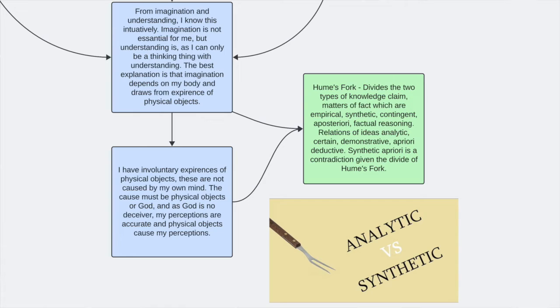Now Hume's Fork divides knowledge into two different categories, analytic and synthetic. A priori and a posteriori. Claims about the world and claims that are a priori known prior to experience of the world. And so we have matters of fact and we have relations of ideas. Matters of fact are facts. Facts must be about the world. So that's how I remember that.